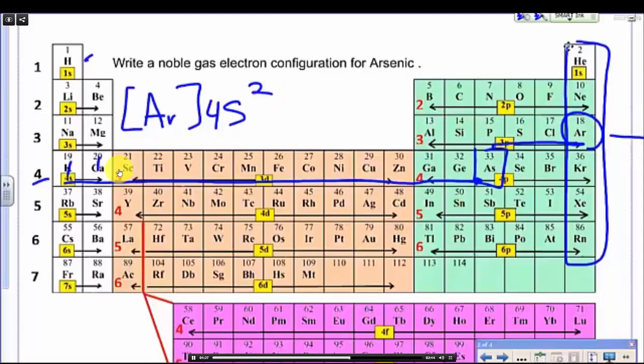Then we move to the next sub-level. Here we have energy level 3 for the sub-level d. So the specific sub-level 3d has how many electrons in it? 1, 2, 3, 4, 5, 6, 7, 8, 9, 10. So it is 3d10.